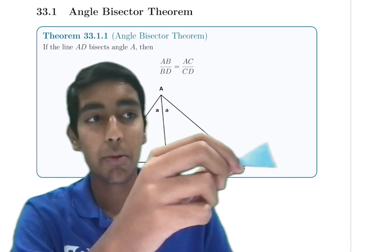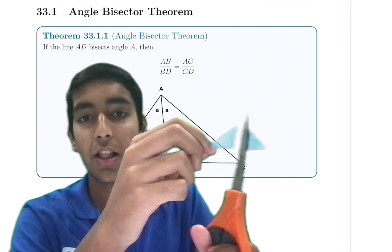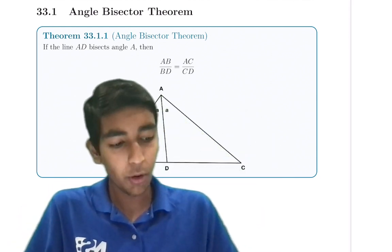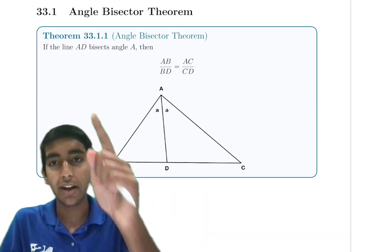This is a triangle, but what happens when you cut the top angle in half? That is called an angle bisector.